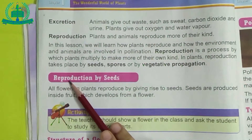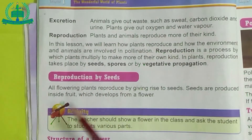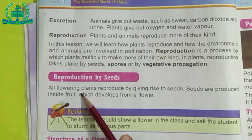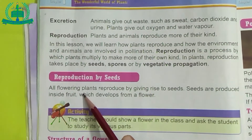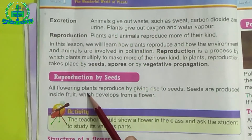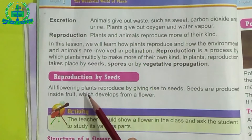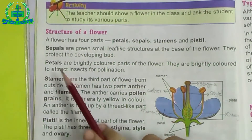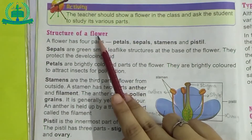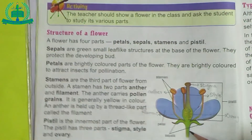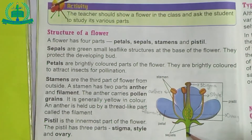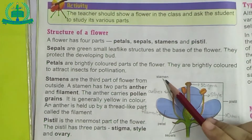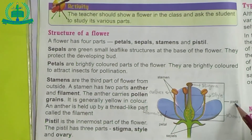Next: Reproduction by seeds. As I said before, reproduction takes place by seeds. Seeds are developed from a flower. We learn about the structure of a flower. A flower has four parts: first, sepals; second, petals; third, stamen; and last, pistil.